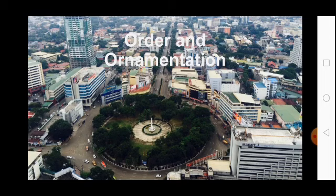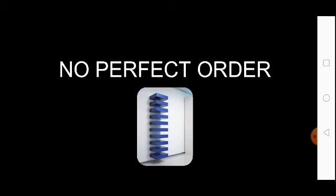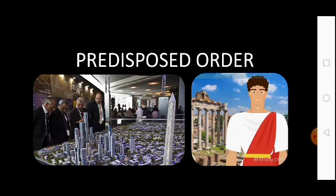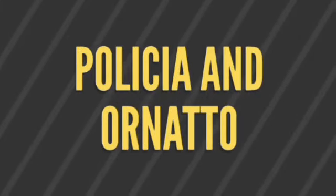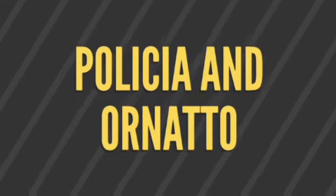Order has existed since society began. It is not to be taken as a perfect order, but we are partaking of a predisposed plan by authority for our community, as members of it and as part of its history. An example of predisposed order in the public space was the establishment of the concepts of policia and ornato in 16th century Spain.